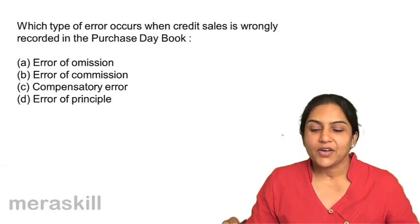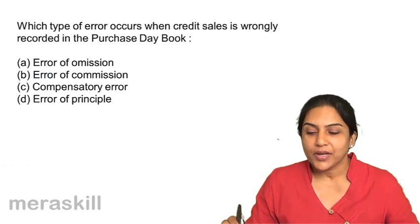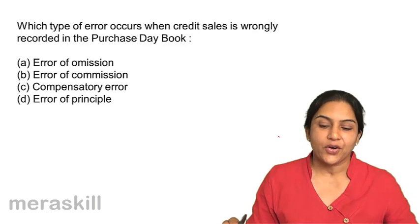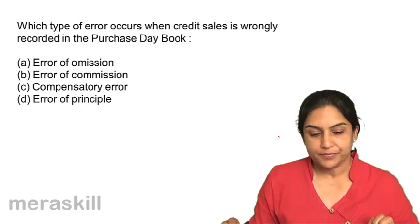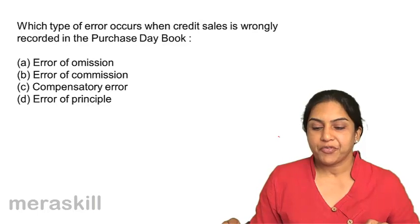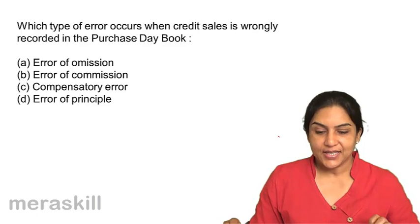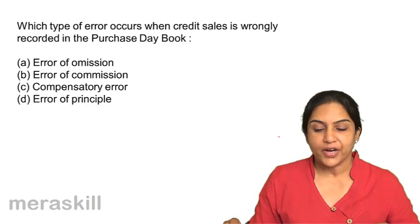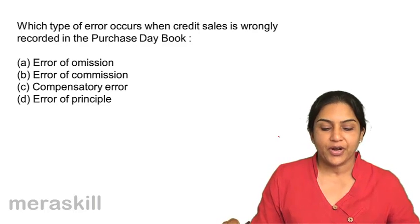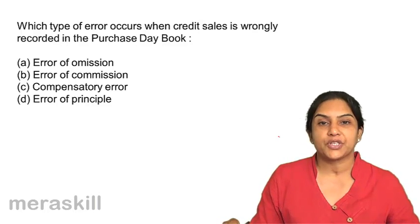Which type of error occurs when credit sales is wrongly recorded in the purchase day book? Is it an error of omission, commission, compensatory error, or error of principle?